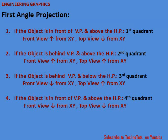For first angle projection: when the object is in front of the VP and above the HP, it is in the first quadrant — the front view is drawn above the XY line and the top view below the XY line. When the object is behind the VP and above the HP, it is in the second quadrant — both the front view and top view are drawn above the XY line. When the object is behind the VP and below the HP, it is in the third quadrant — the front view is drawn below the XY line and the top view above it. When the object is in front of the VP and below the HP, it is in the fourth quadrant — both front view and top view are drawn below the XY line.